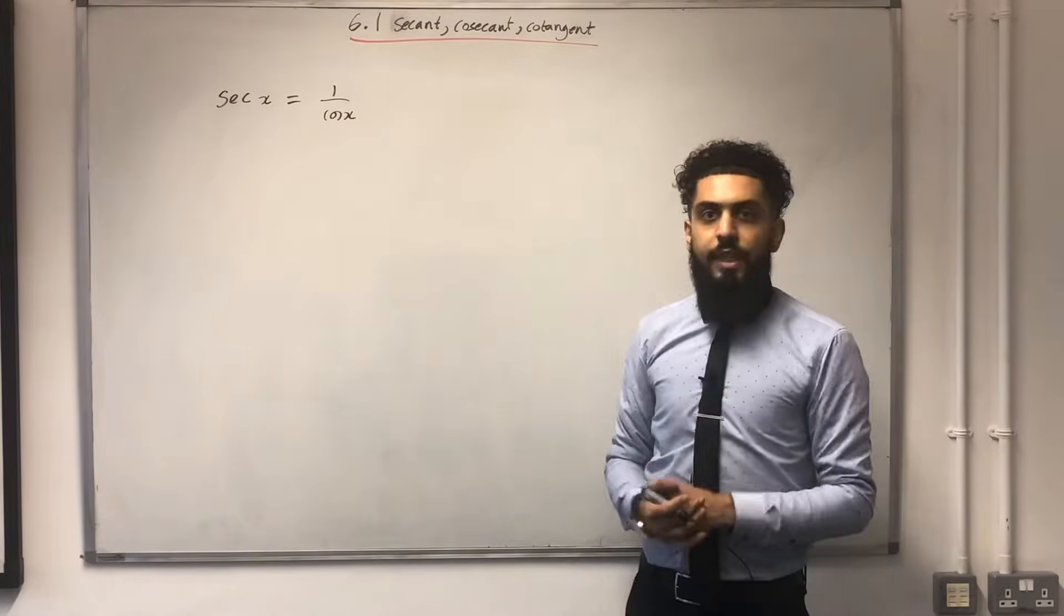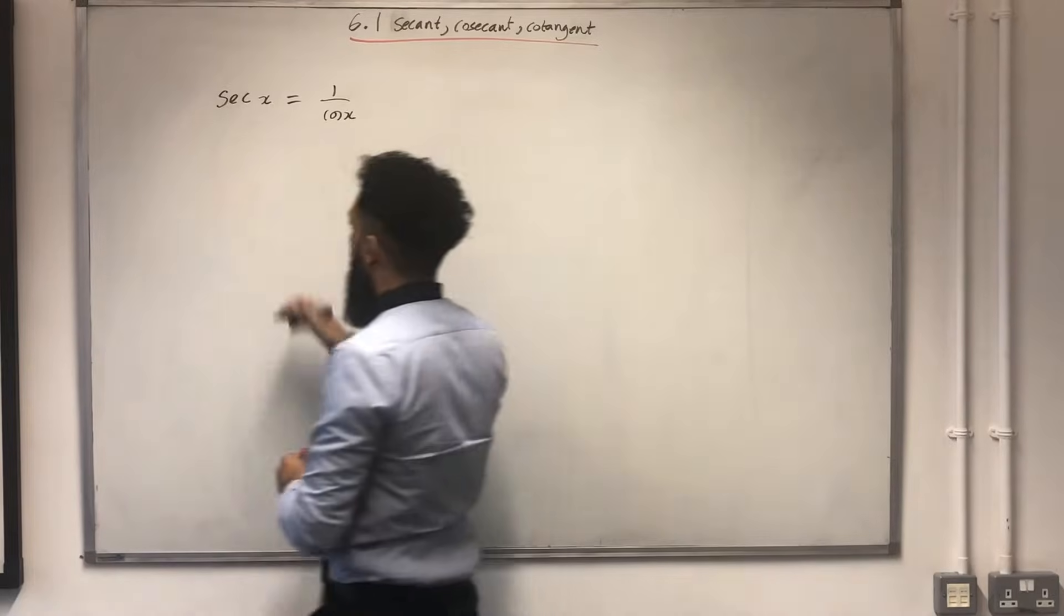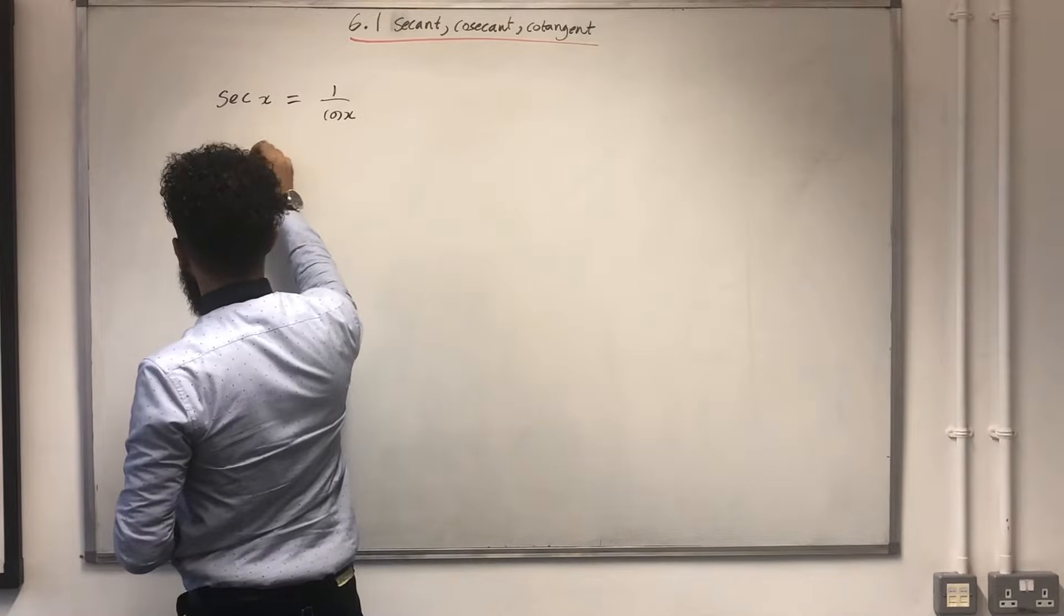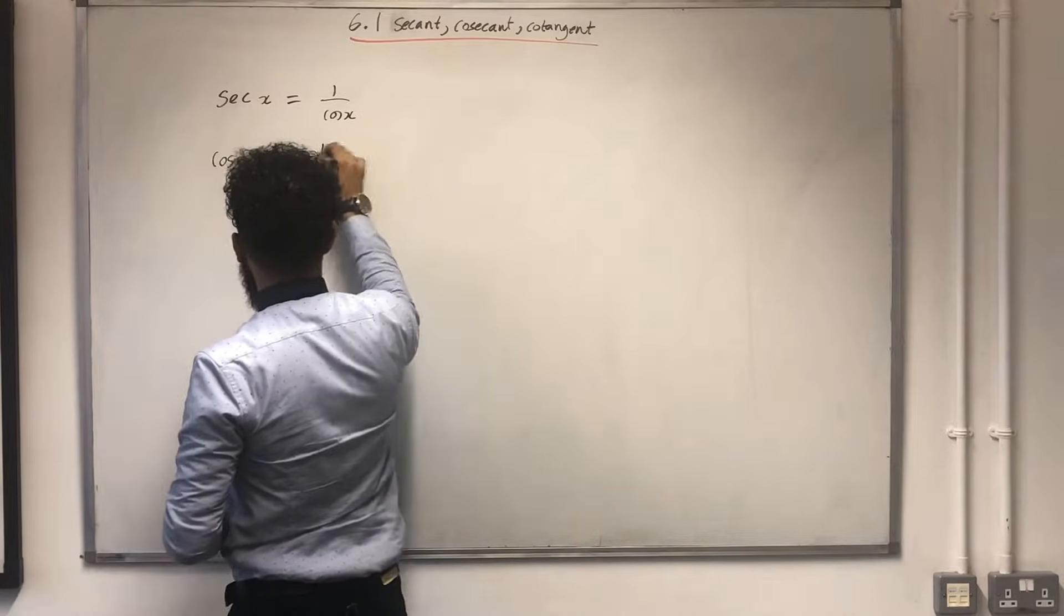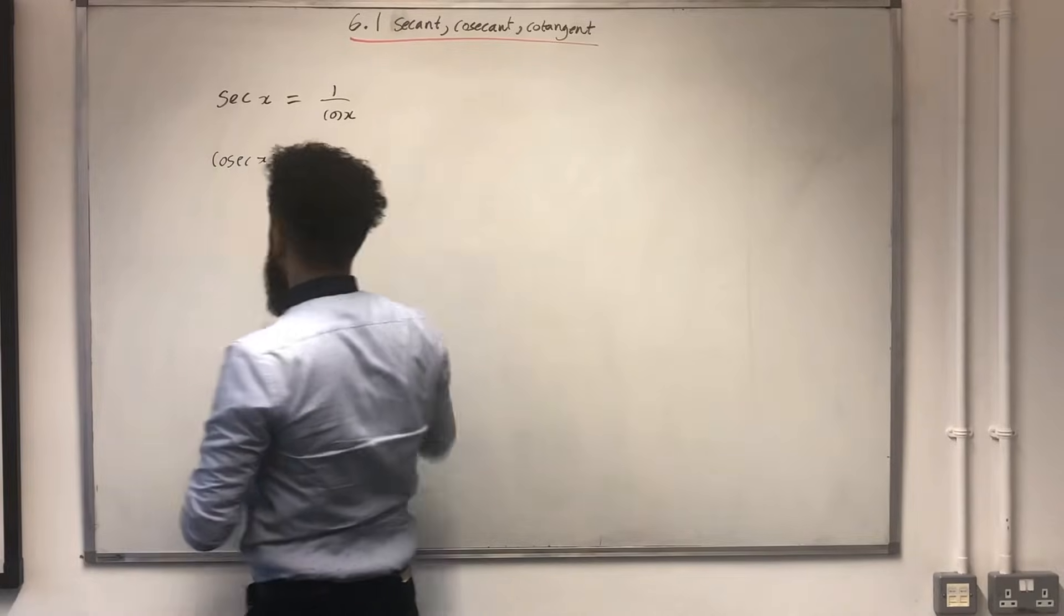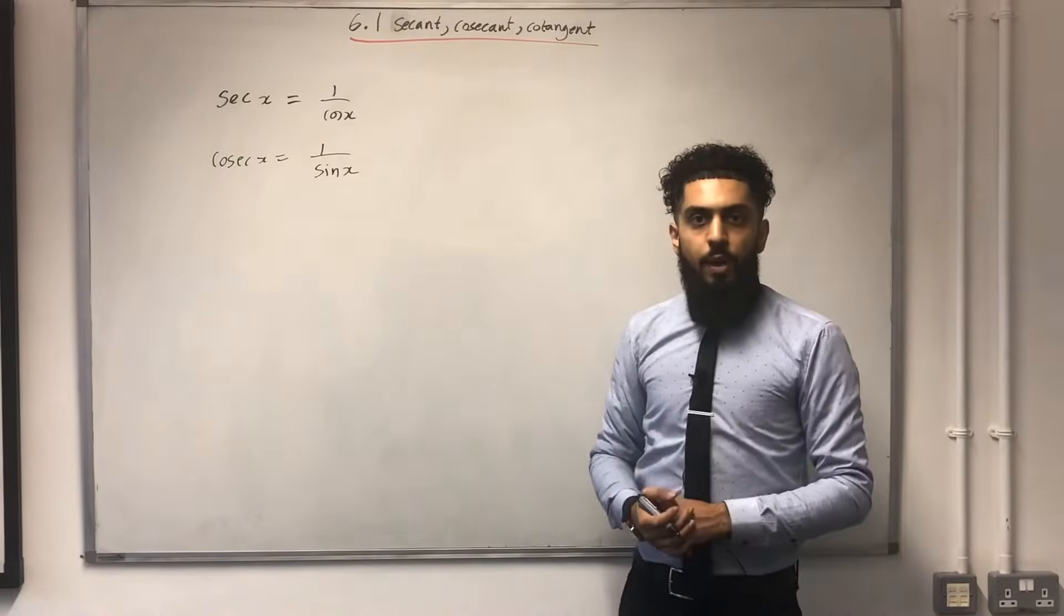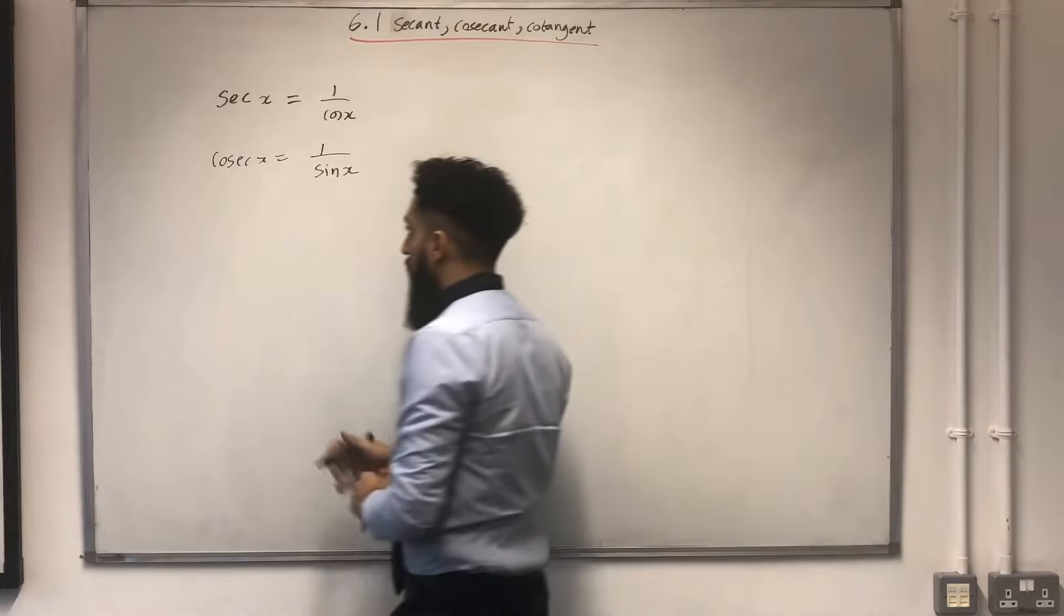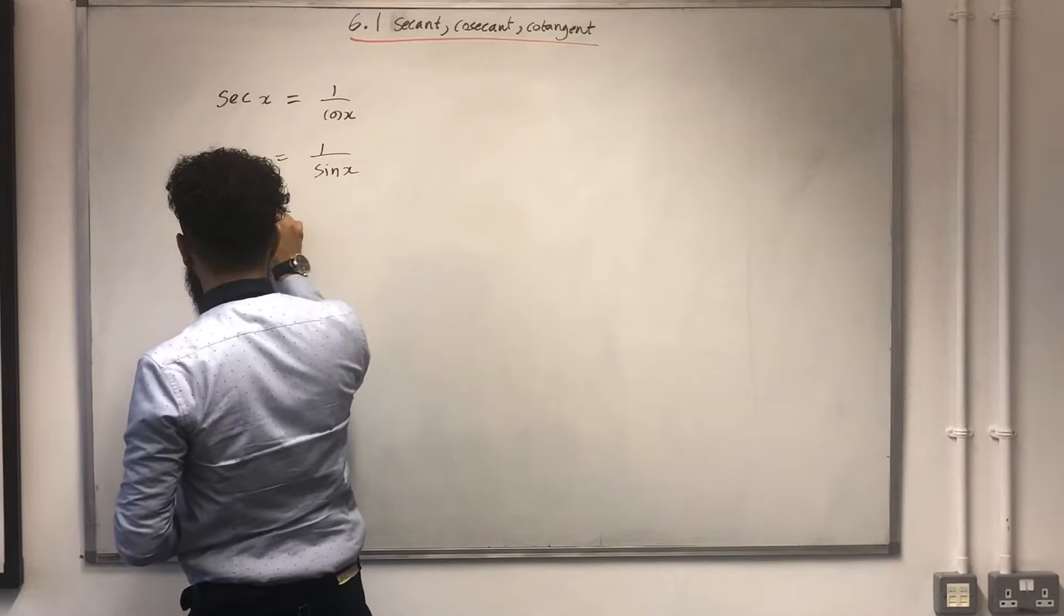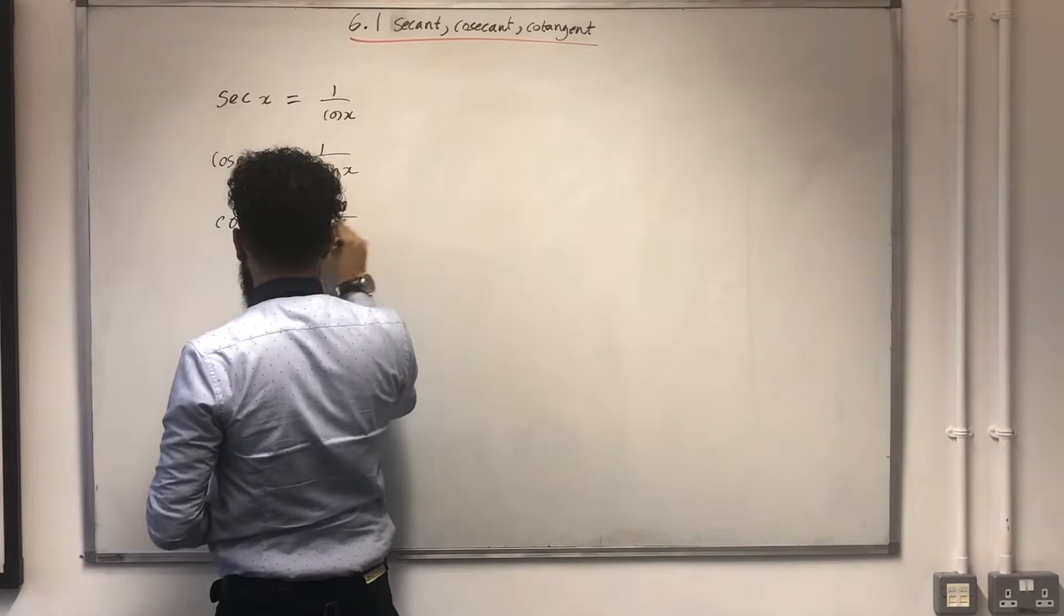The next one is cosecant x. You can just call it cosec x. That is equal to 1 over sin x. The third one is cotangent x. You can just call it cot x. That is equal to 1 over tan x.